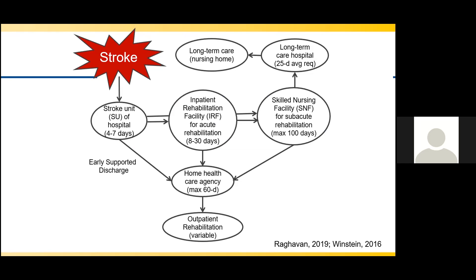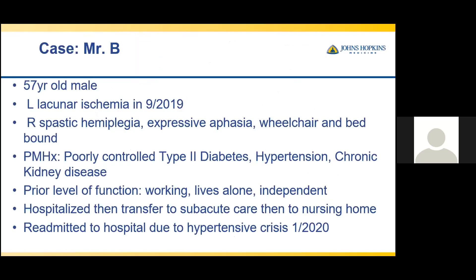As a result, patients coming through to outpatient can still be significantly impaired. To illustrate how this system focused on transition through care and triage versus recovery, meet Mr. B. Mr. B is a 57-year-old male who suffered from a lacunar infarct back in September of 2019. This resulted in a right spastic hemiplegia, expressive aphasia, and dysphagia, and is wheelchair and bed bound.